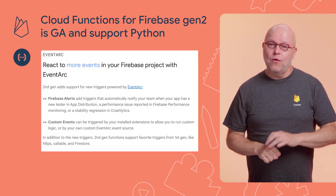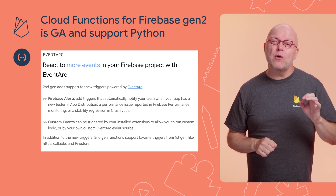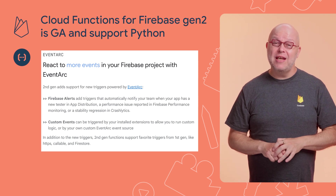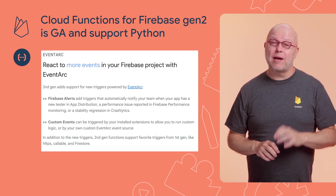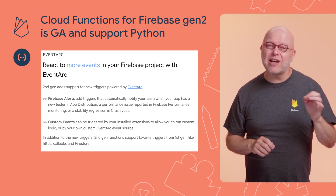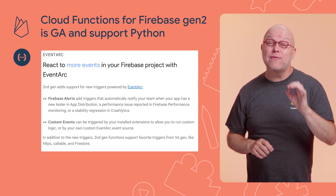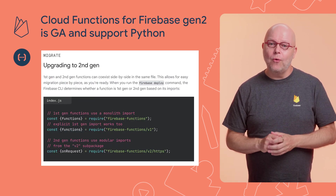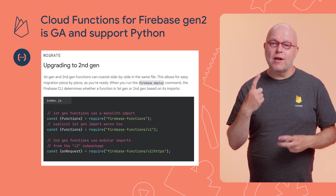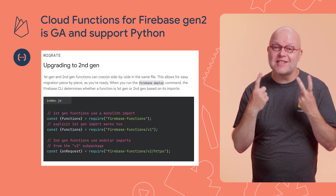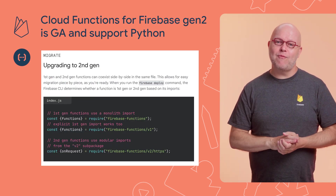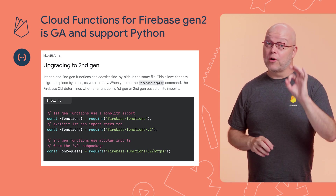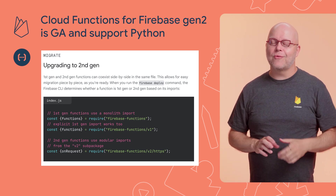Gen 2 is based on Eventarc, which means that you can trigger on almost any event source you can imagine, including new Firebase alerts, Firestore triggers, and even custom events that you define yourself. Best of all, you can run Gen 1 and Gen 2 functions side by side in the same file, so start using Gen 2 for your new functions right away.